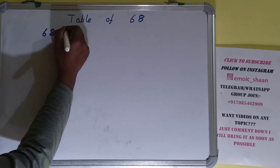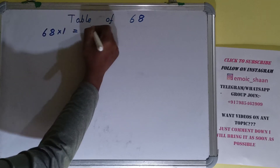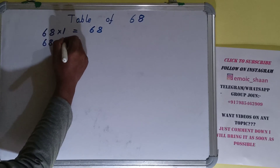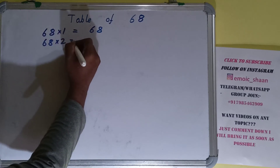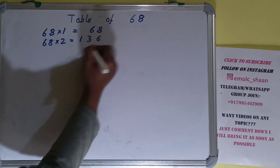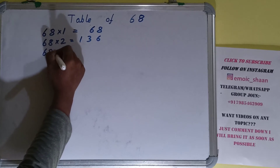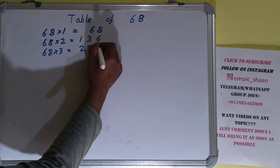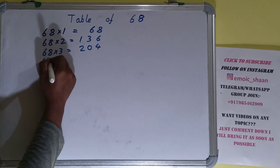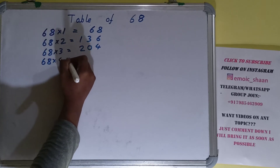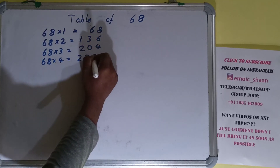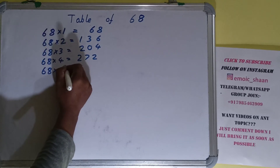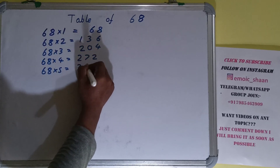68 into 1 is 68. 68 into 2 is 136. 68 into 3 is 204. 68 into 4 is 272. 68 into 5 is 340.